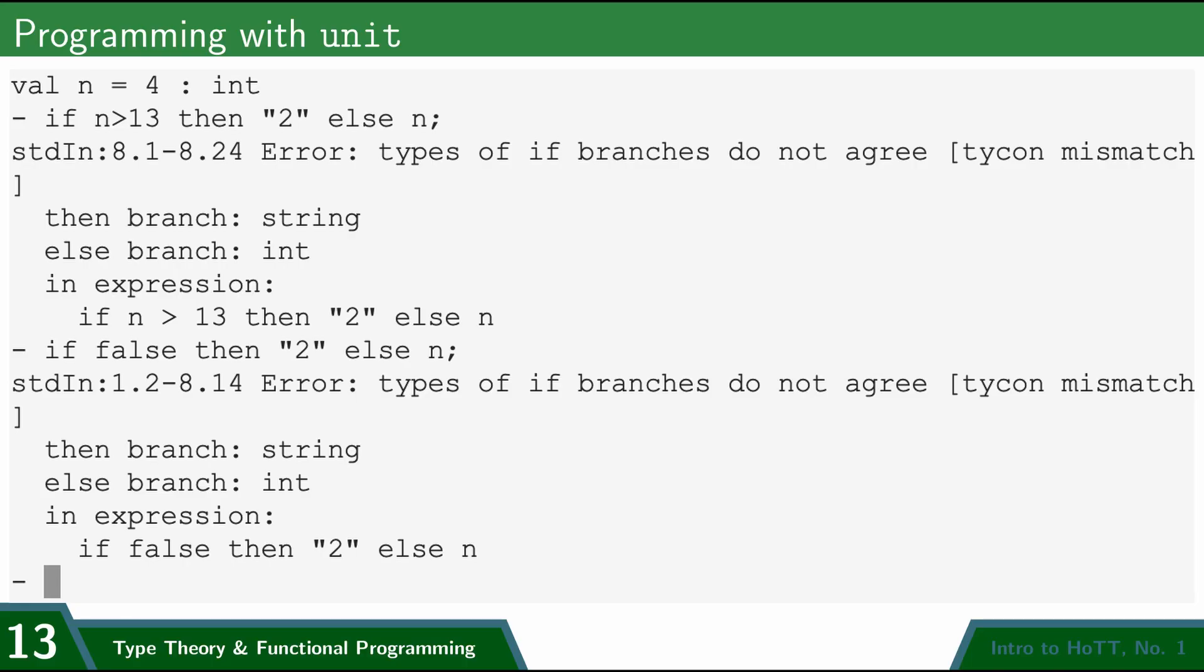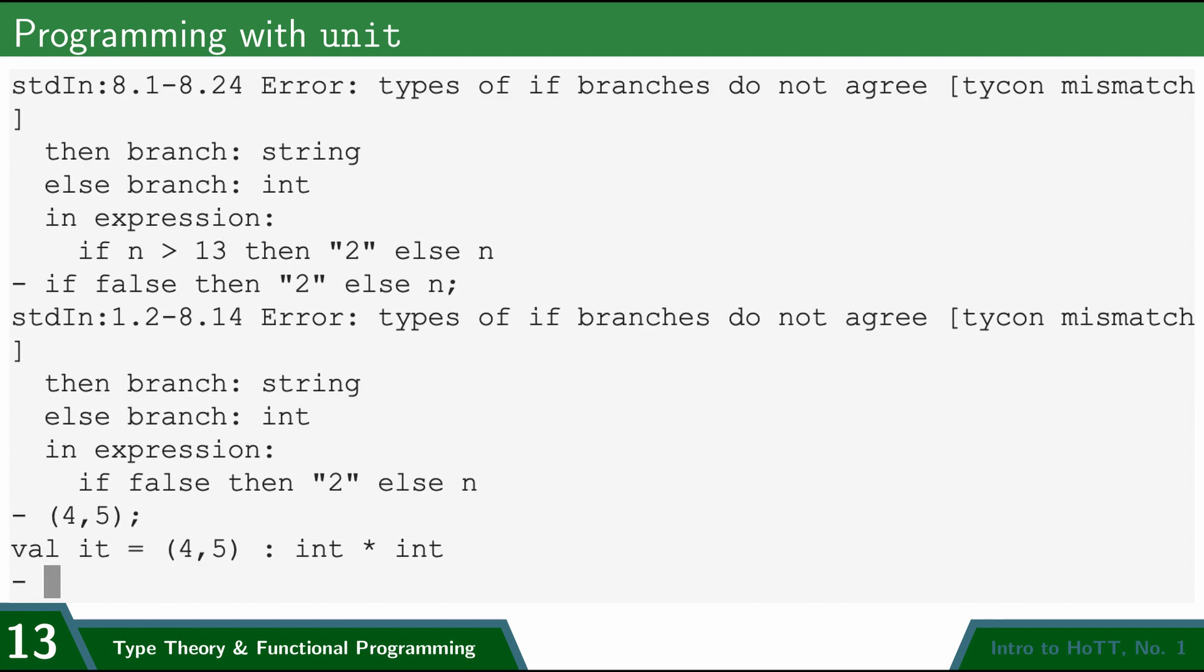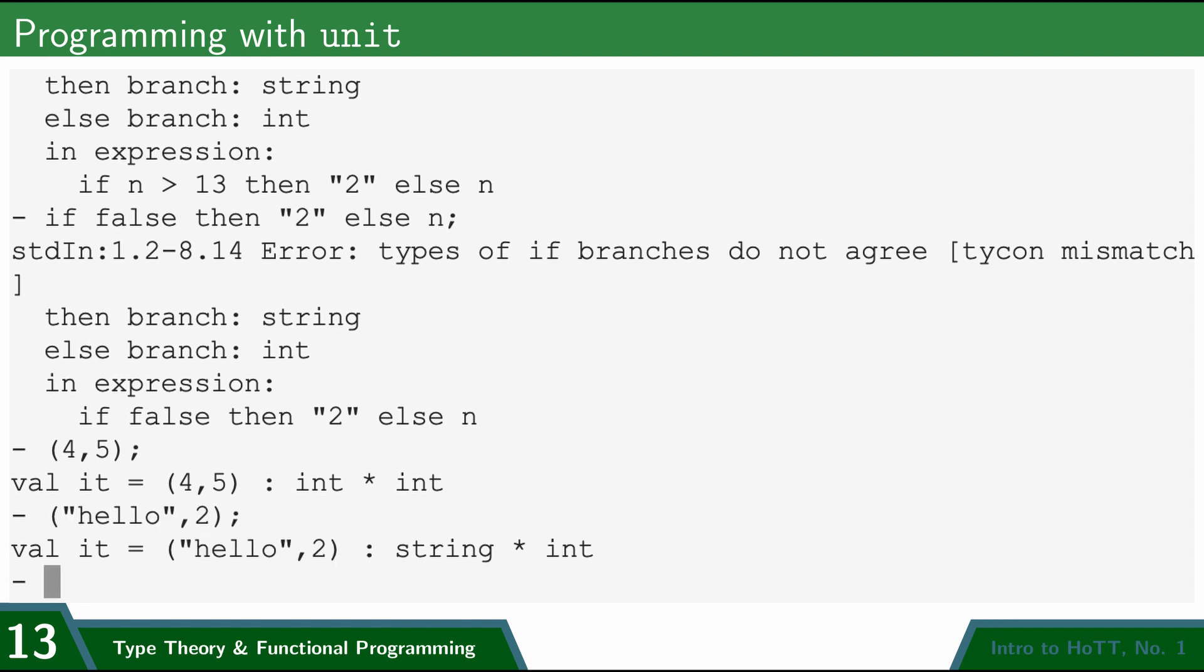But I promised you the type unit, so let's look at that. One thing you can do in languages like sml is have pairs of values. So I could do 4, 5, and it reports to me that that is an expression of type int star int. And I can do this with different types as well. So I can say hello and 2, and so that's string star int.